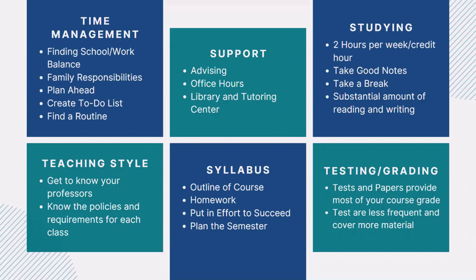Studying is pretty different in college — your class might only meet once or twice a week, so there's a lot more homework between days. You can expect to spend about two hours per week for every credit hour. So if you're taking a three-credit-hour class, you can expect to spend about six hours on that class a week. Take good notes — that is an important skill to learn. Also make sure you take breaks because you will have a substantial amount of reading and writing to do, and clearing your mind even for just five minutes is really important.